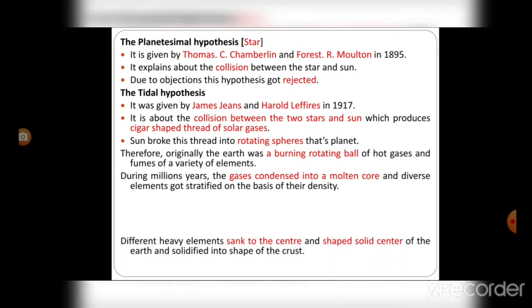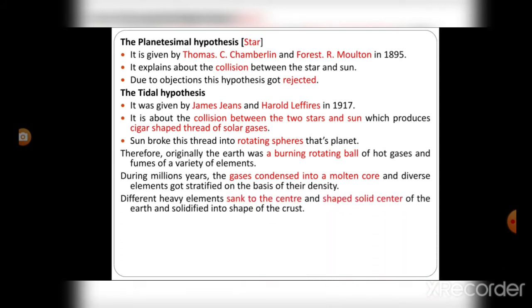During millions of years, the gases condensed into a molten core and diverse elements got stratified on the basis of their density. Different heavy elements sank to the center and shaped a solid center of the earth and solidified into the shape of the crust. The piece of Earth between center and crust formed a mantle which was solid.